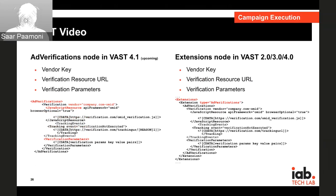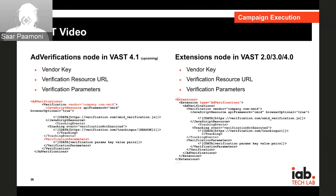For video execution, the VAST 4.1 spec is upcoming and in the final stages of preparation. The same set of parameters need to be provided. The key difference between VAST 4.1 and VAST 2, 3, and 4 is that in VAST 4.1, the ad verification node is a first-class node in the XML, whereas in earlier versions it will be an extension. VAST 2, 3, and 4 extensions are expected to dominate the market initially because they're easier and quicker to implement, but migration to VAST 4.1 is anticipated over time.